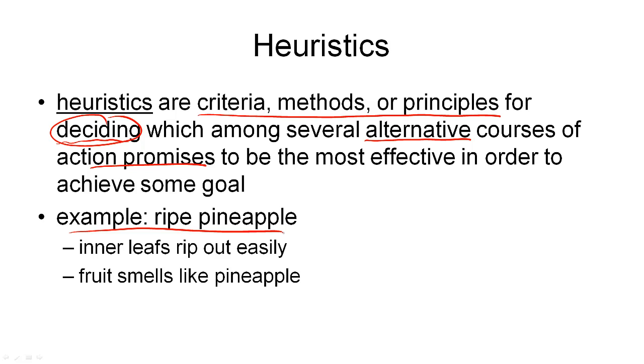The reason why I've circled the word deciding here is because this gives us a different idea of what a heuristic can be. All we need from a heuristic is just a decision which alternative looks best.